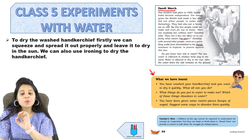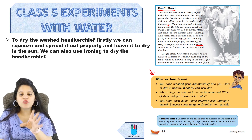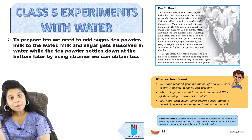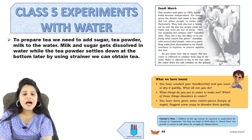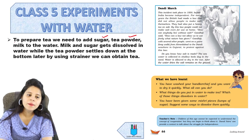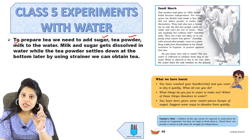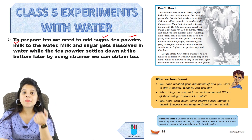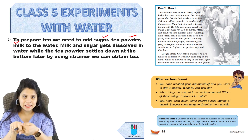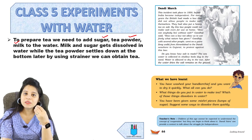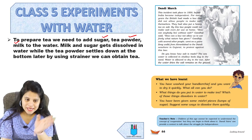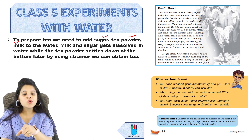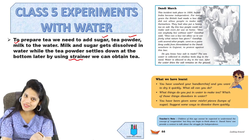What things do you put in water to make tea, and which of those things dissolve in water? To prepare tea, we add sugar, tea powder, and milk. Milk and sugar get dissolved in water while the tea powder settles down at the bottom. Later, by using a strainer, we can obtain the tea.